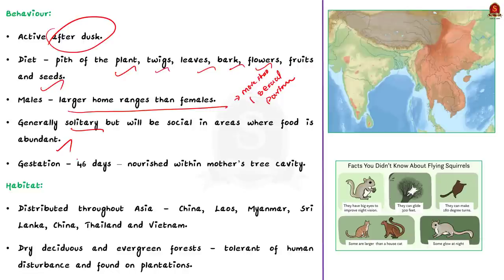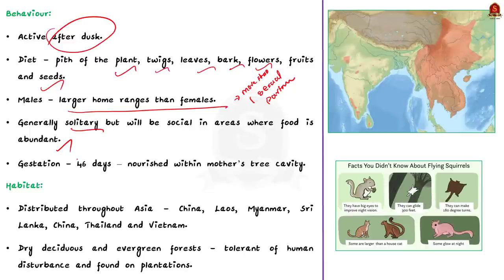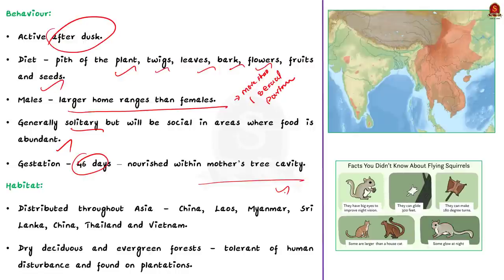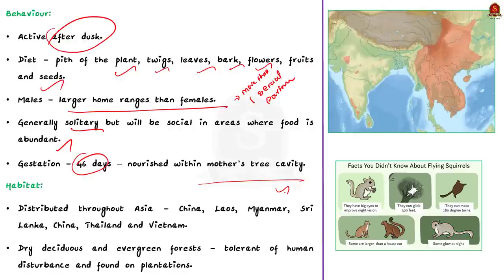After a gestation of around 46 days, young ones are born within the mother's tree cavity. As in most species, the young ones are raised only by the mother and are raised in the hollow trees where the mothers stay.